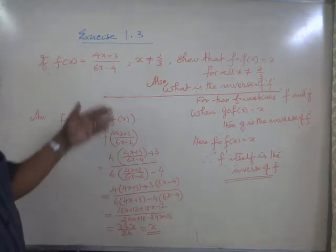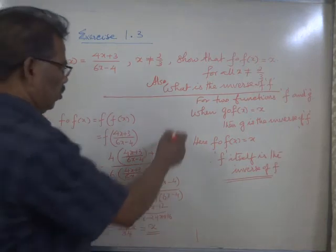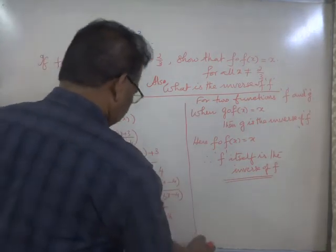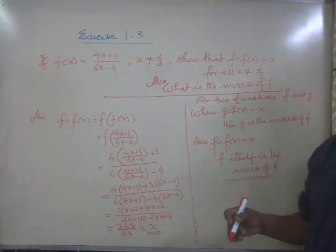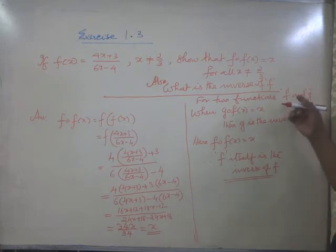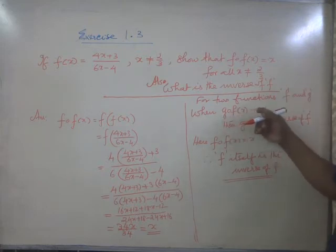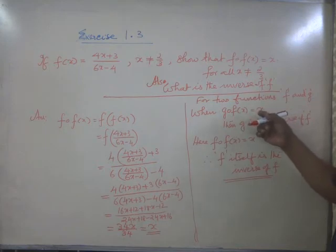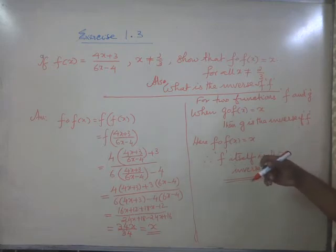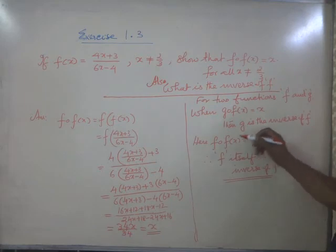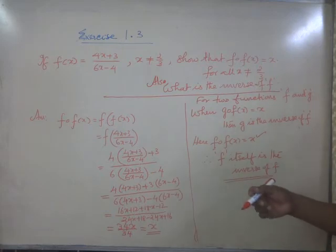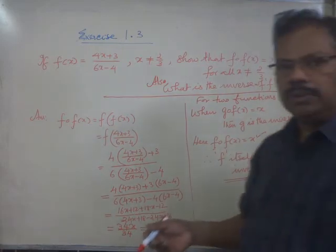Now for the first part we got the answer. For the second part: suppose you are given two functions f and g, and the product function of g and f is found to be x itself, that is the identity. Then g is the inverse of f. Therefore, the inverse of f is f itself.